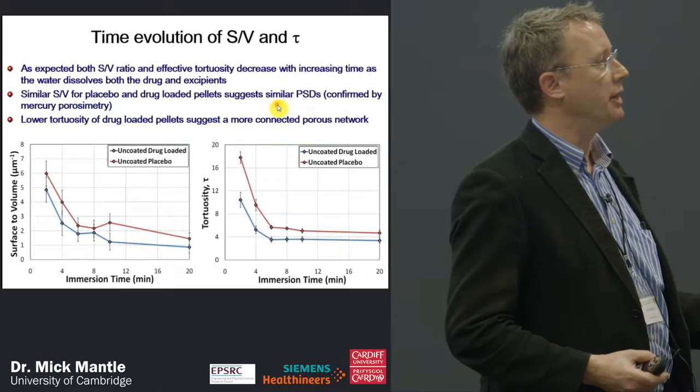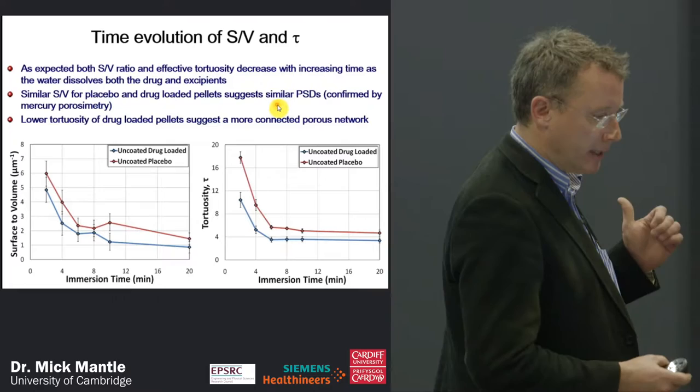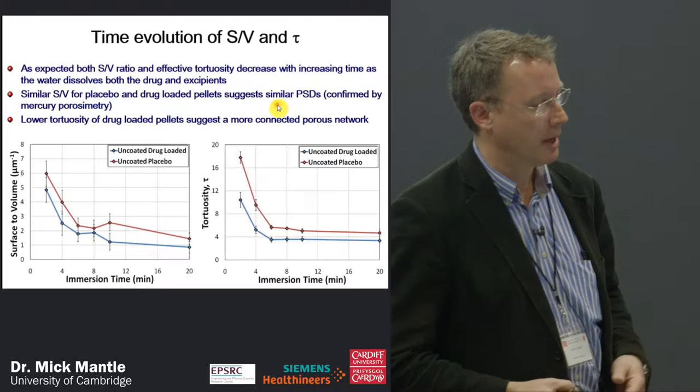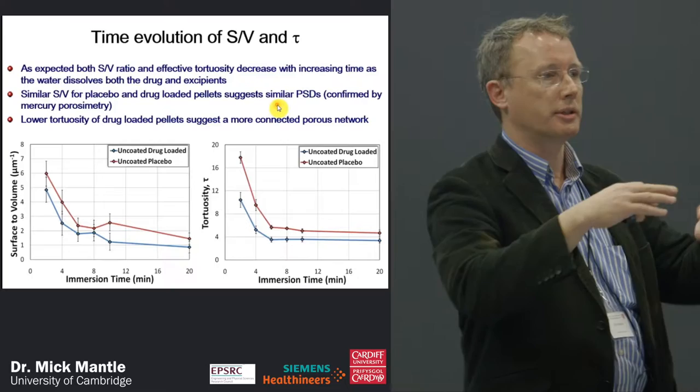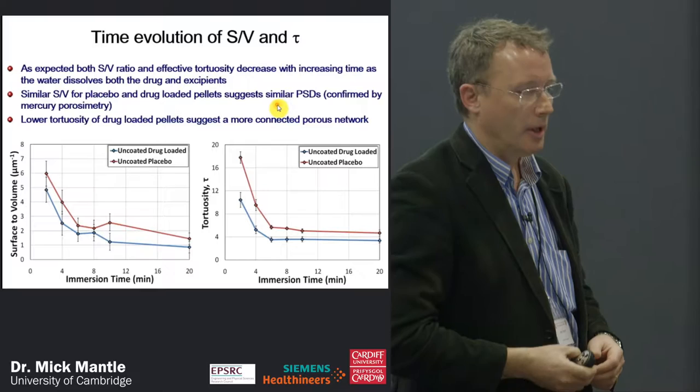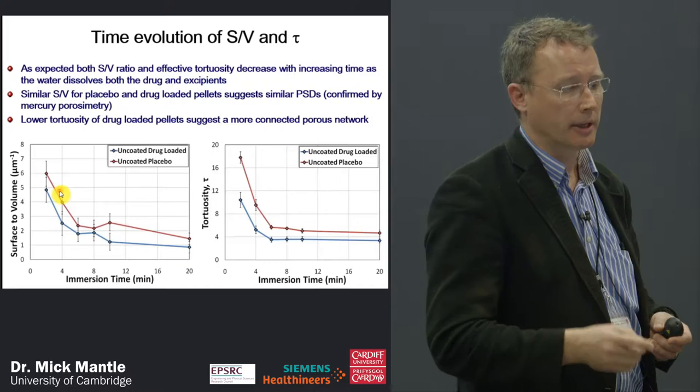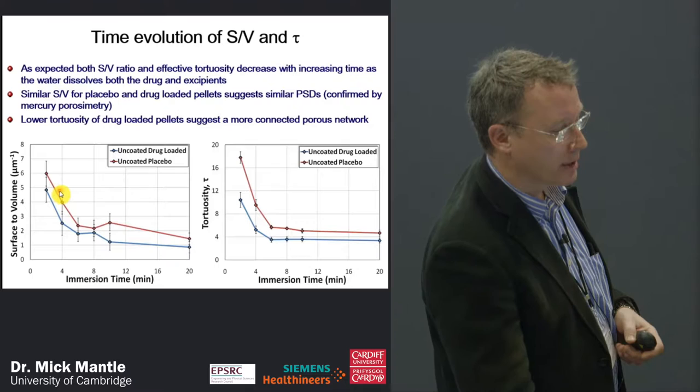We can now look at the evolution of the surface-to-volume ratio and tortuosity extracted from the fits. On the left, the plot of surface-to-volume ratio versus immersion time shows that for both uncoated drug-loaded and uncoated placebo pellets, the surface-to-volume ratio decreases with time as water gets into the matrix and dissolves parts of the pore structure. We get similar surface-to-volume ratios with overlapping error bars, suggesting the pore size distributions are fairly similar — confirmed later by mercury porosimetry.